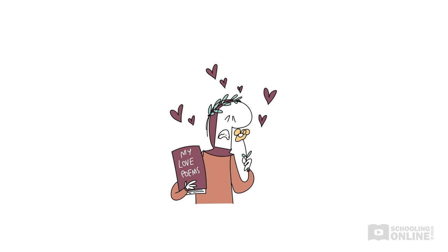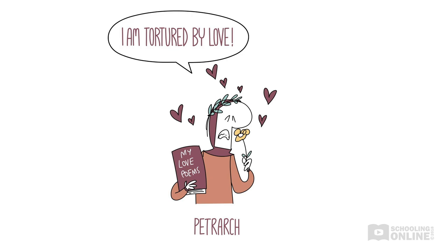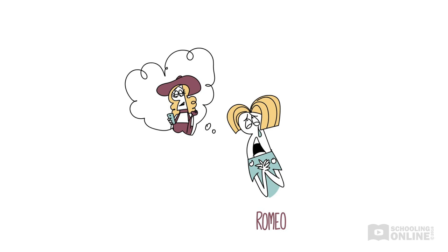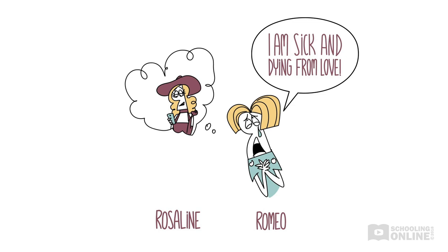For example, a lot of portrayals of love at the time were inspired by love poems by an Italian poet named Petrarch. These popular poems demonstrated the concept of courtly love, where men would dramatically declare their love for women from afar, often with extravagant and flowery language. Remember Romeo at the beginning of the play? He is totally obsessed with Rosaline, and his language is over-the-top and flowery, just like Petrarch's poems.